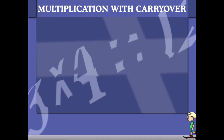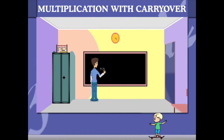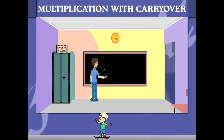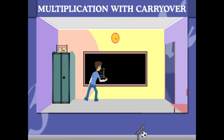Multiplication with carryover. Robin is on the classroom board. His question is 12 multiplied by 6.